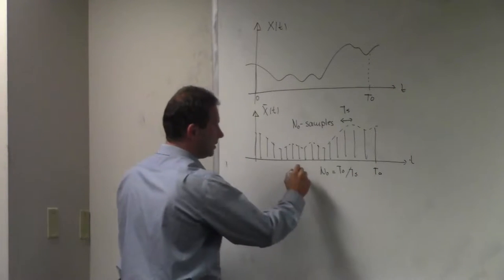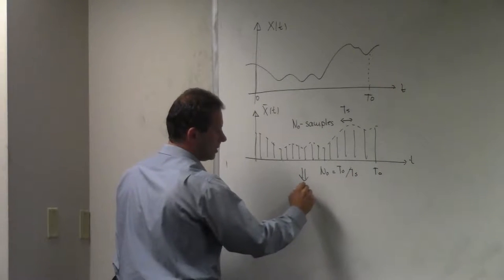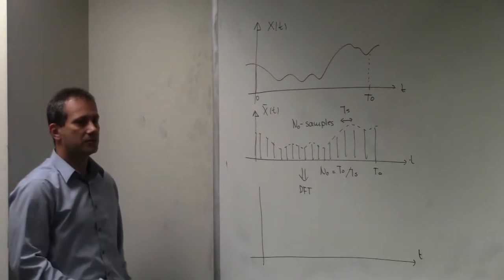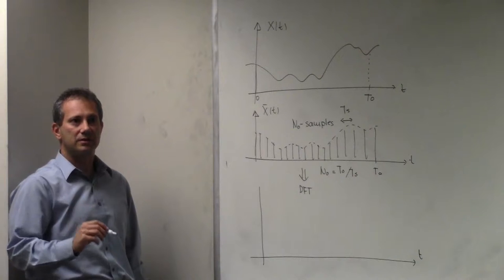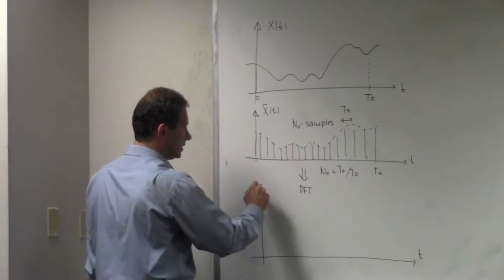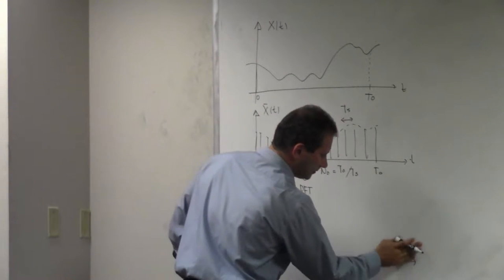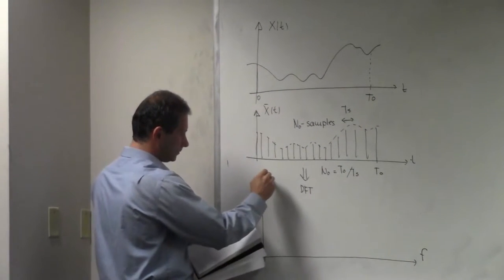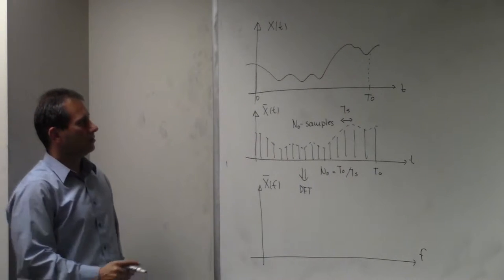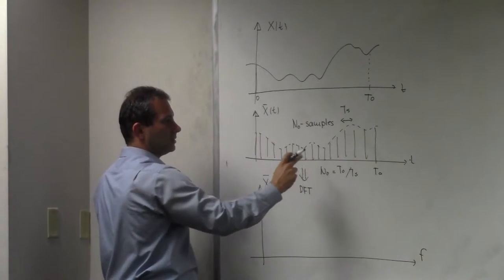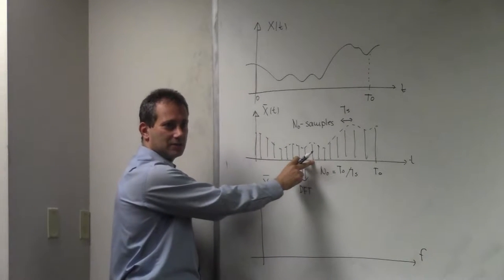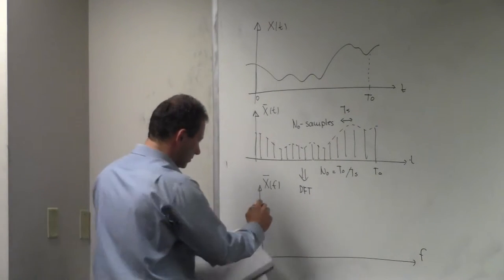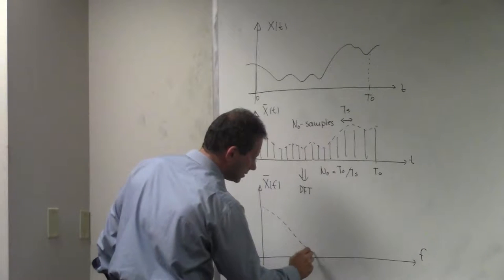As a result of the discrete Fourier transform, you end up with the spectrum of the signal — but not the actual spectrum. You get the sampled version of the spectrum. Specifically, we get the sampled version of the spectrum of the truncated signal, because that's the one that participates in the discrete Fourier transform. And that spectrum would look like this, for example.